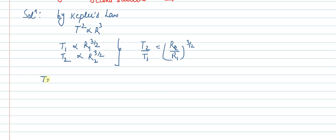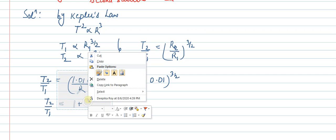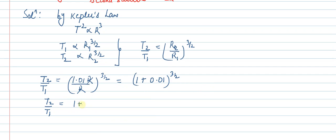r and r cancel, so T2 upon T1 is equal to 1.01r upon r to the power 3/2. r and r cancel, and we have 1.01 to the power 3/2, which equals (1 + 0.01) to the power 3/2. Using binomial approximation, this equals 1 + (3/2) times (1/100), so T2 by T1 equals 1 + 3/200.